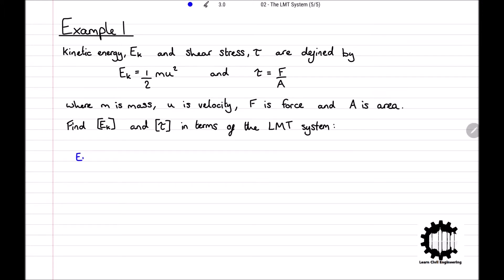Finding the dimensions for kinetic energy then, we know that the dimensions of kinetic energy is equal to the dimensions of mass times by the dimensions of velocity squared. In terms of the LMT system, the dimensions for mass is M and the dimensions for velocity is L times T to the power of minus 1.